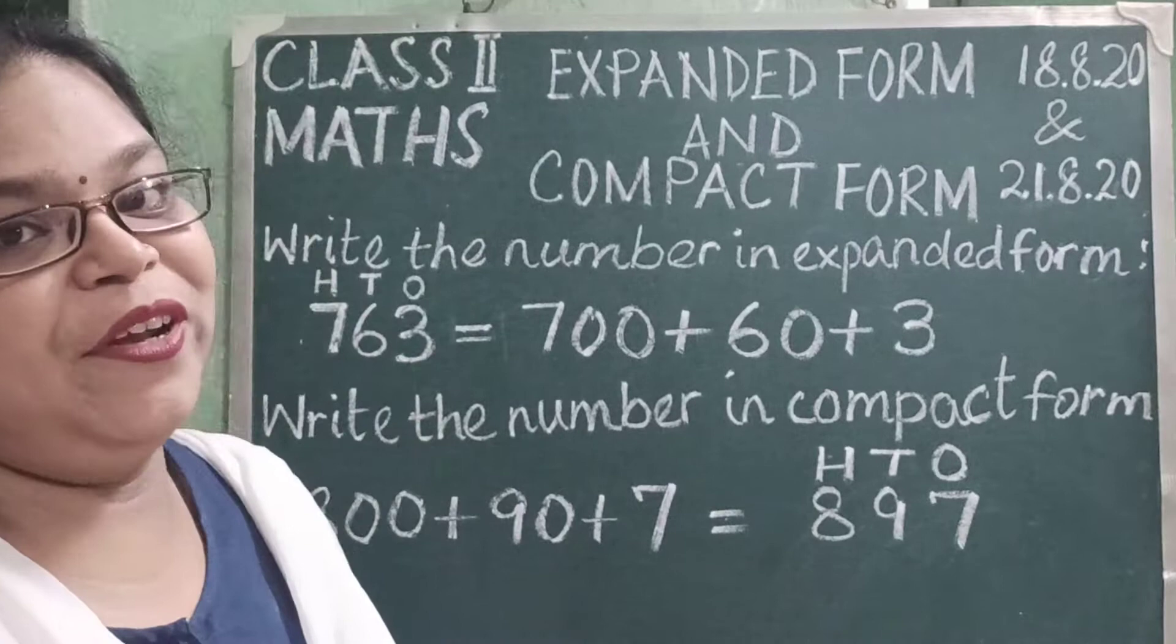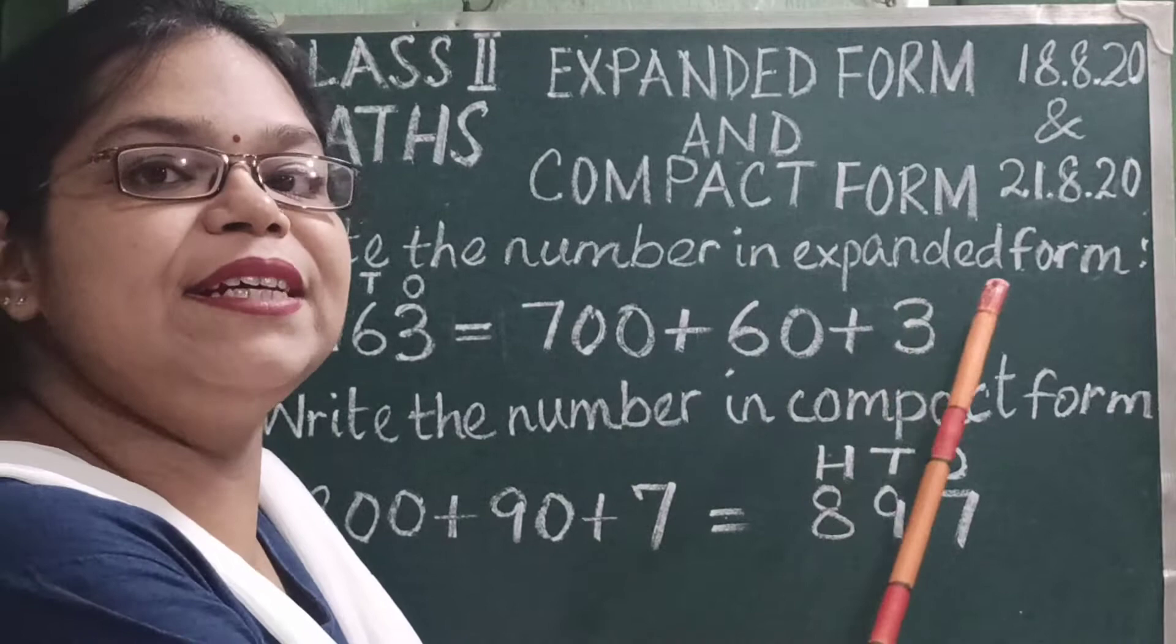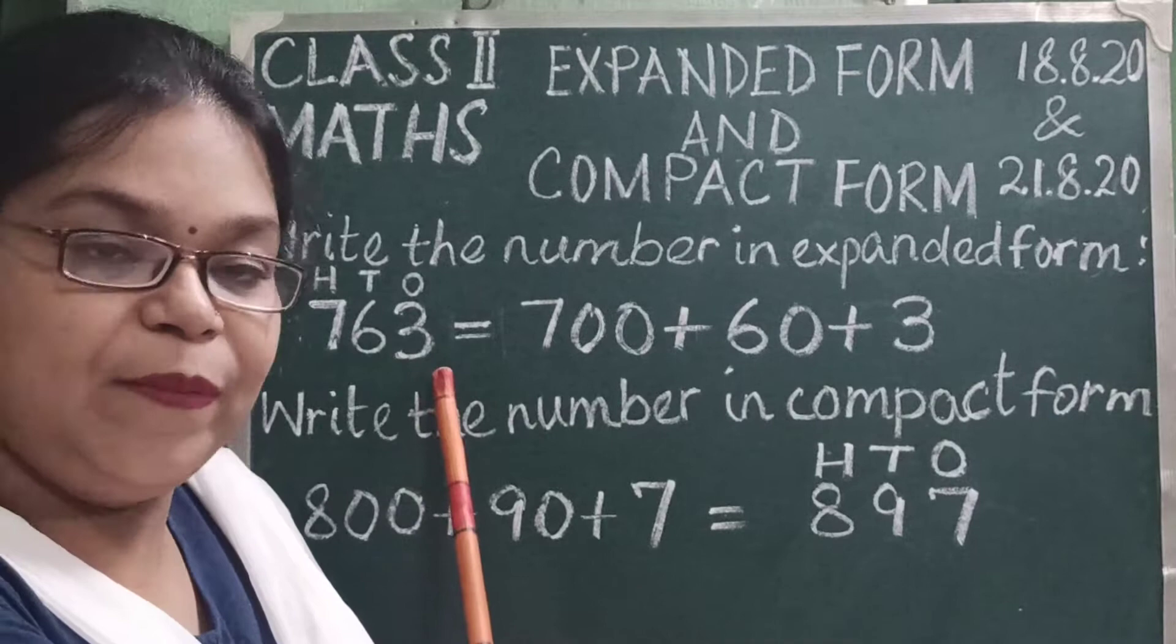Now children, please look at the board. Write the number in expanded form. Here we have the number 763.